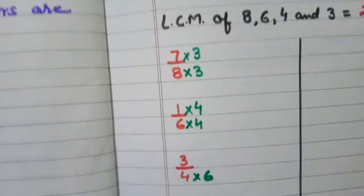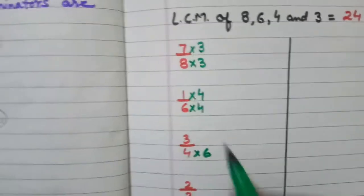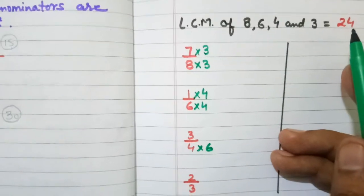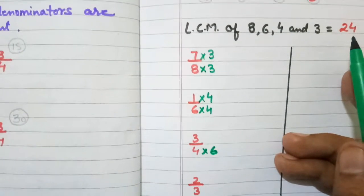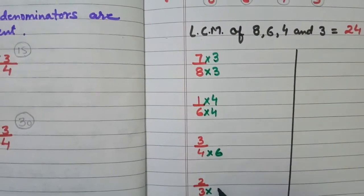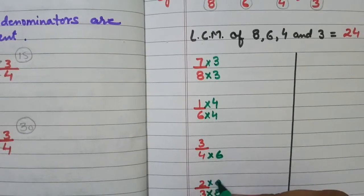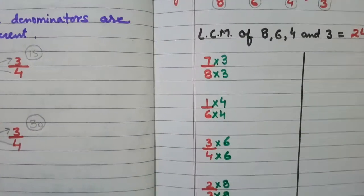See, why I am multiplying? Because I want to make all the denominators 24. I mean that should be equal to my LCM. 3 multiplied by 8, so it will also be multiplied by 8. And here it will be multiplied by 6.